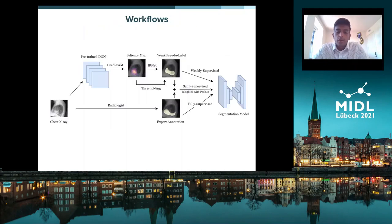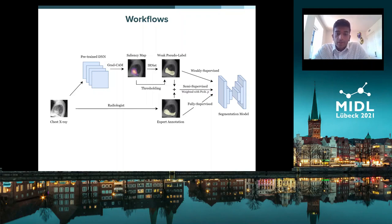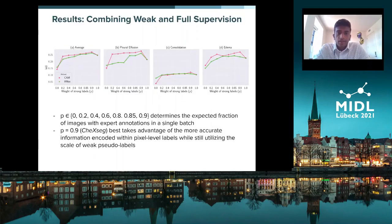This is an overview of the workflow. We start with the chest X-ray image. The top row shows that we apply GradCAM to a pre-trained DNN to obtain a saliency map. Once obtained, we use either IRNet or thresholding to generate the weak pseudo label — this constitutes the weakly supervised setting. The bottom row shows the radiologist-annotated expert annotation used in the fully supervised setting. Combining these pseudo labels with expert annotations gives us ChexSeg, the semi-supervised method.